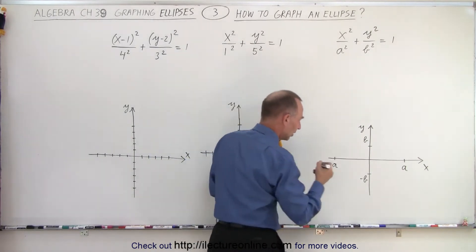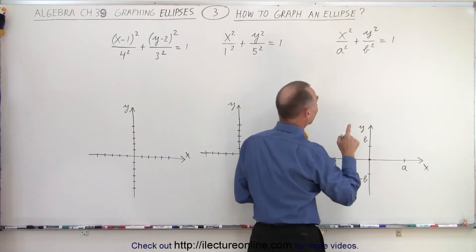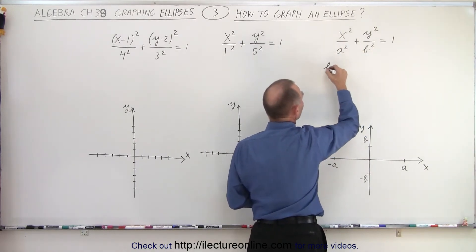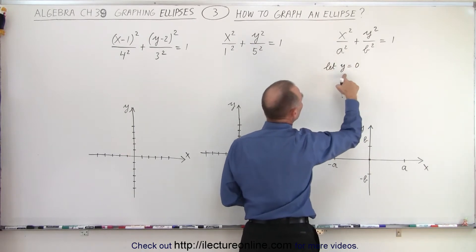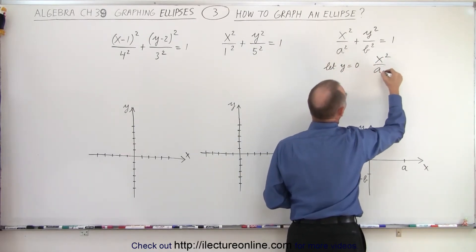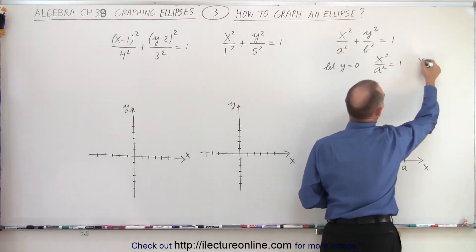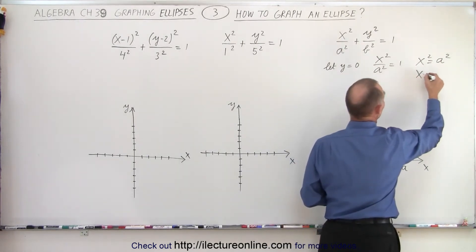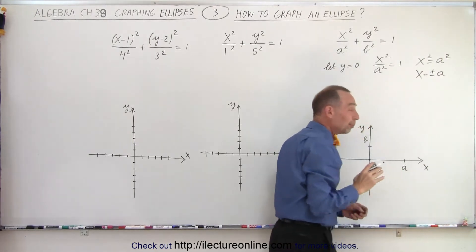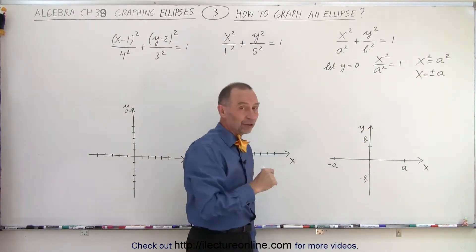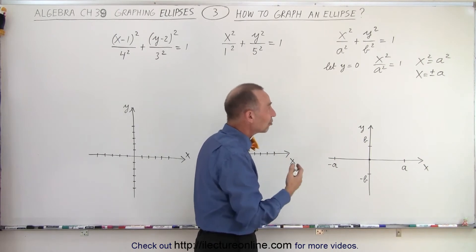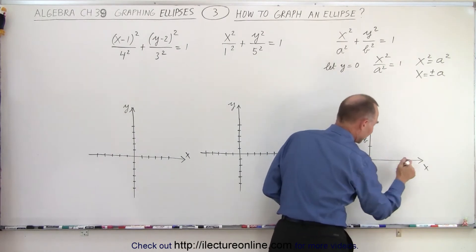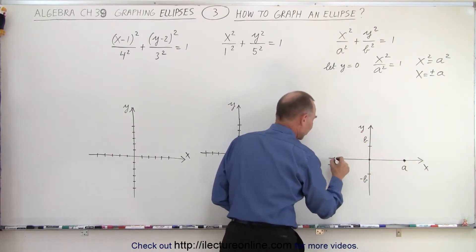Since the central point is at the origin, let's put a point right there. Then we let one of the two variables equal 0. Let y = 0. When we do that, we get x² / a² = 1, or x² = a². Taking the square root of both sides gives x = ±a. We take plus or minus because we need both answers to graph the ellipse. When x = +a, that's one point; when x = −a, that's the other.